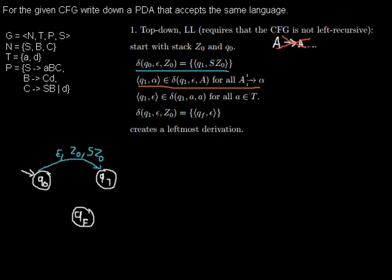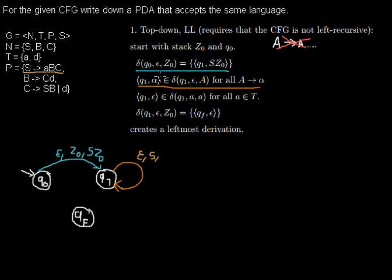For every rule that we have, we want to add a loop from q1 to q1. For example, take S expanding to abc. We read nothing from the input (epsilon), we read the non-terminal on the left-hand side of the rule — in this case S — from the stack, and we push every symbol on the right-hand side in order. So in this case we push abc onto the stack.